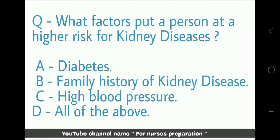Next question is in MCQ form: What factors put a person at a higher risk for kidney diseases? Option A: Diabetes. Option B: Family history of kidney disease. Option C: High blood pressure. Option D: All of the above.